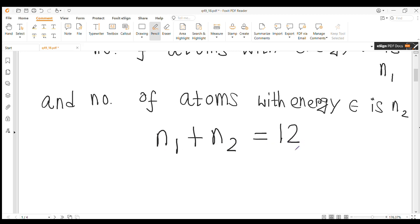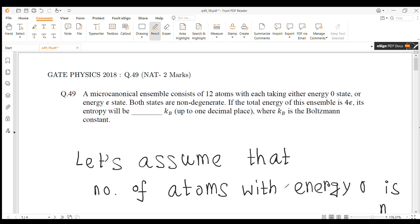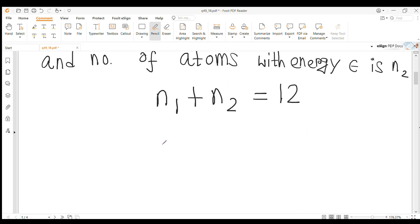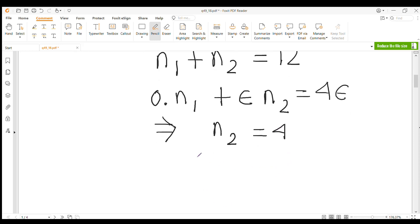And the total energy of the ensemble is 4 epsilon, so we have 0 times n1 plus epsilon n2 equal to 4 epsilon. So n2 is equal to 4. Thus n1 is equal to 12 minus n2 equal to 8.